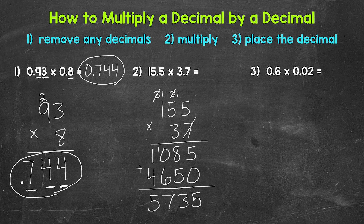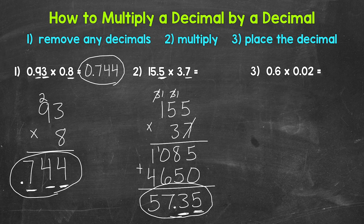So let's look at the original problem and see how many decimal digits we have — how many digits are to the right of a decimal. This 5 is 1 and this 7 is 2. So our answer needs two decimal digits: one digit, two digits. So the decimal goes in between the 7 and the 3. This is our answer: 57 and 35 hundredths. And we are done with number 2.